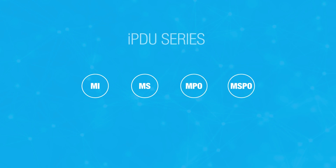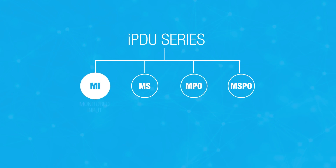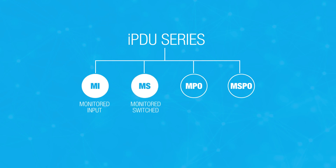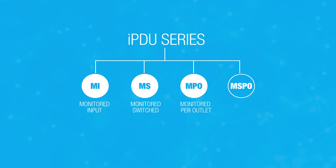The four PDU series include MI, which stands for monitored input; the MS, which is monitored and switched; the MPO, which is monitored per outlet; and the MSPO, which is monitored and switched per outlet.